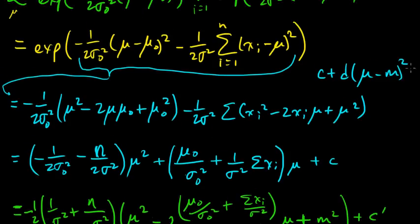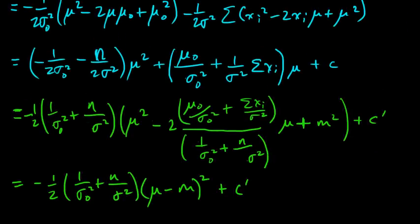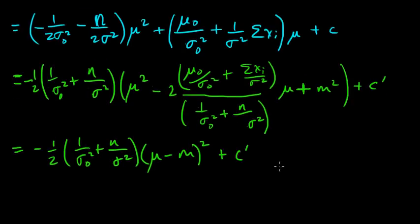We were trying to get it in this form because we wanted to show that we could express it in the form of a Gaussian distribution. This would give it in the form of a Gaussian, and we got that form. So this would be the D here, and we would like to match this up.